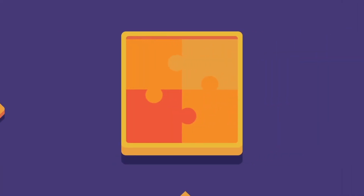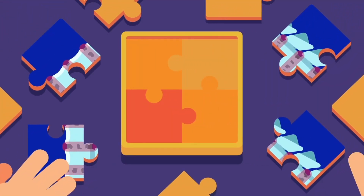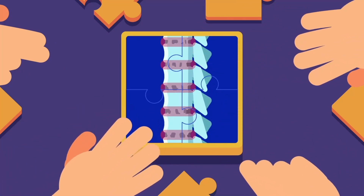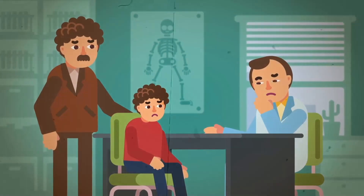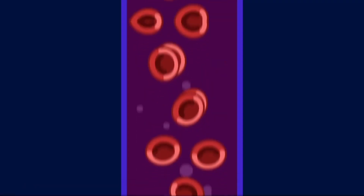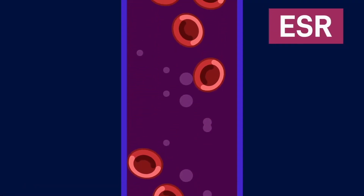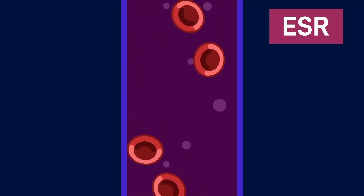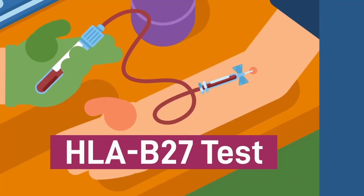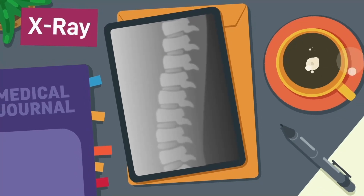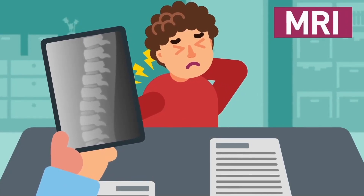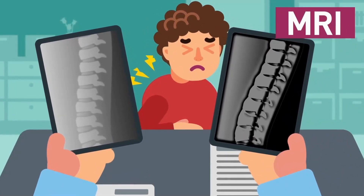No single test can be the gold standard to confirm that you have ankylosing spondylitis, so the doctor may need pieces of the puzzle to diagnose, such as the history of your condition, a physical examination, and blood tests — for example, the erythrocyte sedimentation rate or ESR, which may show inflammation; C-reactive protein or CRP; and a blood test for the HLA-B27 gene. X-rays can confirm the diagnosis, but only if the disease has reached the latter stages. MRI scans may show the typical changes at an earlier stage of the disease.